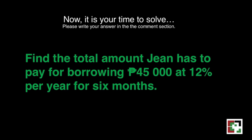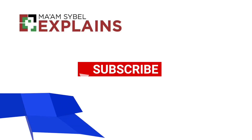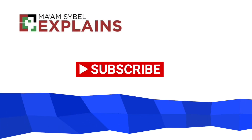Now it is your time to solve. Please write your answer in the comment section — I'll be waiting for your answer. The question is: find the total amount Jean has to pay for borrowing 45,000 pesos at 12% per year for 6 months. Don't forget to hit the like button if you think this is helpful. Till next time! Bye!